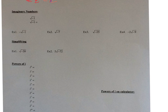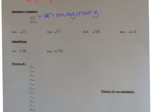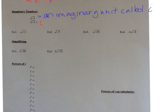So what is the square root of negative 1? Well, we can't have that in real numbers. So this is called an imaginary unit called i — i for imaginary. When I ask you what's the square root of negative 1, you would tell me i. What about negative the square root of negative 1? The negative goes on the outside, and the square root of negative 1 is i, so I have negative i.